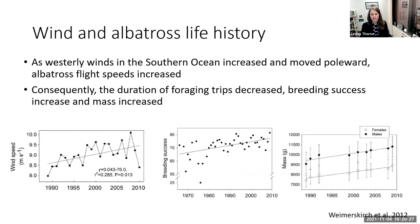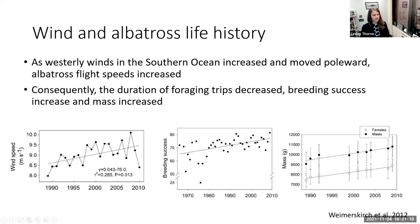Wind can have important impacts on albatross life history. A Science paper by Henri Weimerskirch and colleagues found that westerly winds in the Southern Ocean were increasing, and in association with that, albatross flight speeds increased over the same time period. As a consequence, the duration of foraging trips decreased, and both breeding success and the mass of individual birds — a rough indicator of body condition — increased through time as well. This suggests that wind not only has direct short-term impacts but can influence population-level processes in albatrosses.